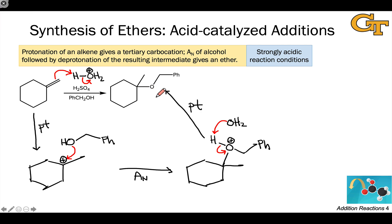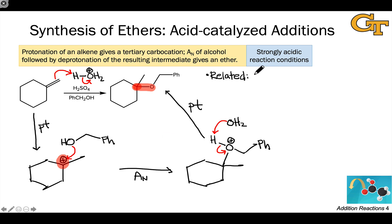Focusing on the structural changes: a hydrogen atom has been added to the less substituted carbon, and the new C-O bond forms at the more highly substituted carbon — the one that bore the positive charge in the carbocation intermediate. This carbon needs to be either highly substituted or able to support positive charge well. When we get to reactions of carbonyl compounds in a future video series, we'll see reactions highly analogous to this acid-catalyzed addition process. Worth mentioning here is hemiacetal formation, which is essentially this same mechanism using a C=O double bond rather than a C=C double bond — so we will see this kind of reactivity again.